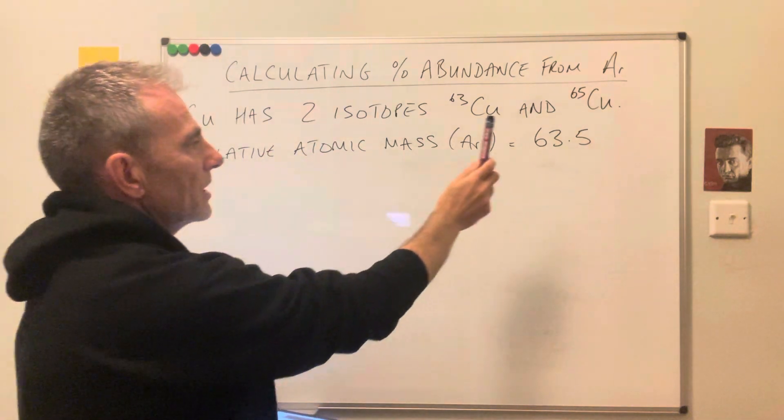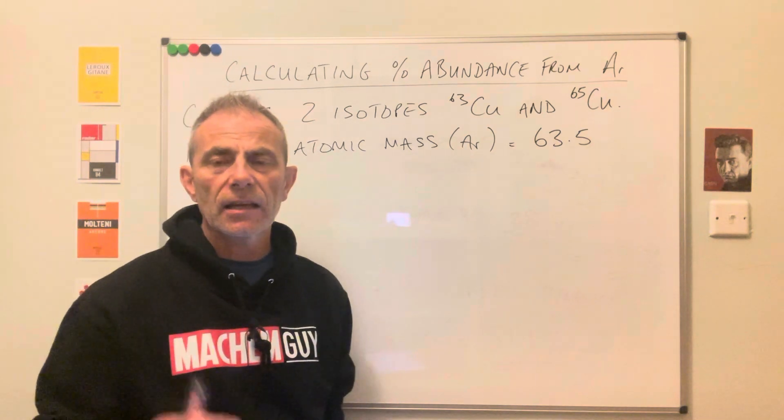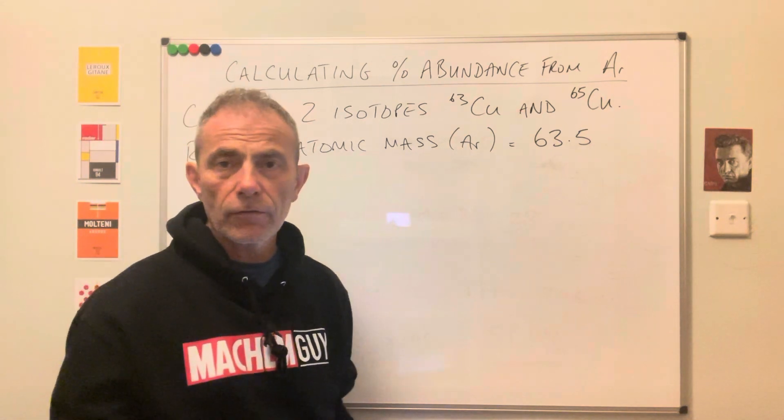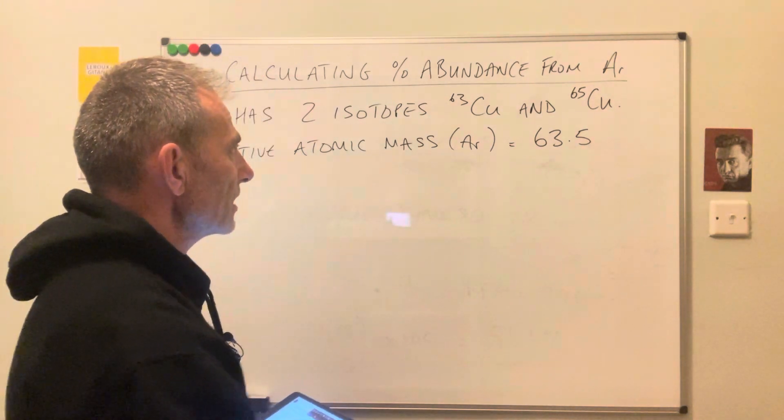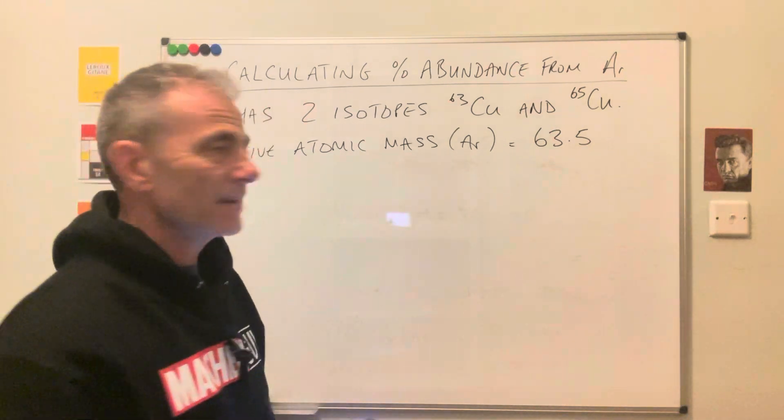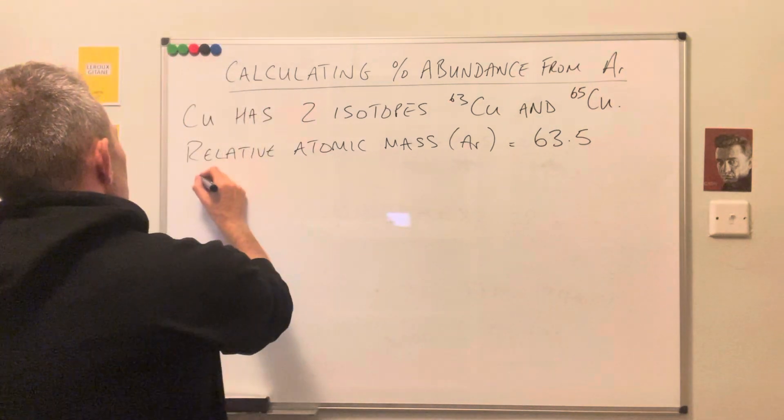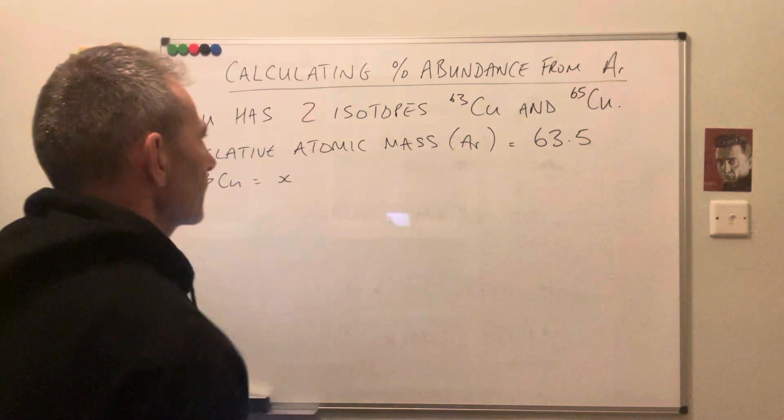So what we've got to do is calculate the percentage abundances of those two isotopes. The first thing I'm going to do is set the copper-63 abundance as x, so ⁶³Cu equals x.